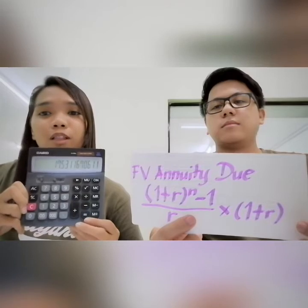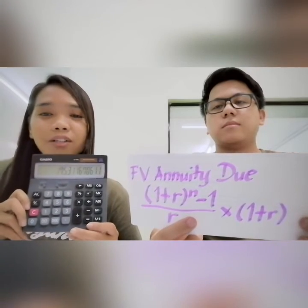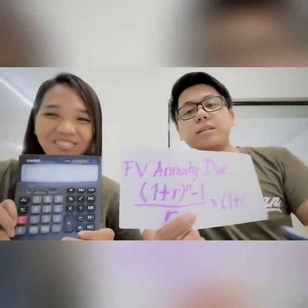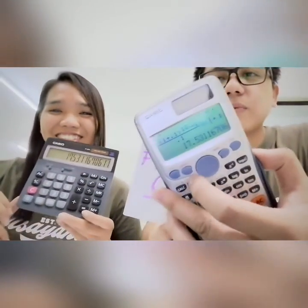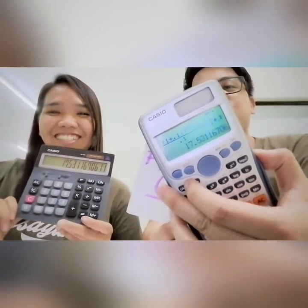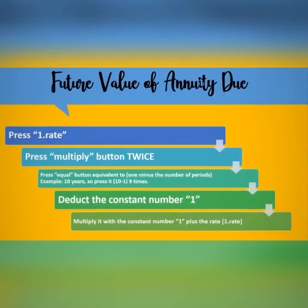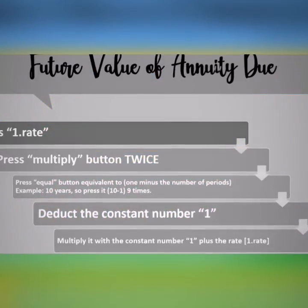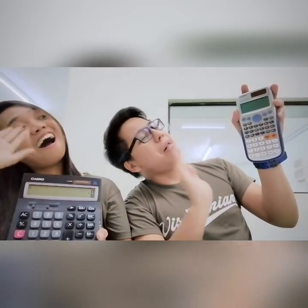So we arrive at the future value factor of annuity due: 17.5312, which is the same result: 17.5312. So there you have it — how to use a basic calculator for time value of money. Now that you know how to use this, it's time to say bye-bye.